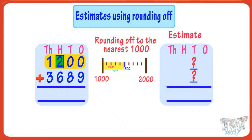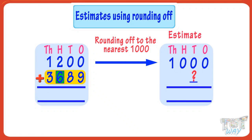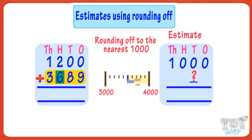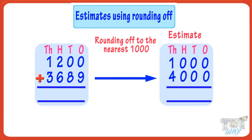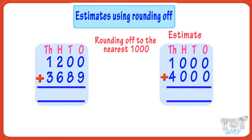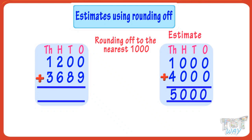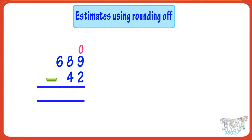In 1,200, the hundreds digit is 2, which is less than five, so we round it down to 1,000. In 3,689, the hundreds digit is 6, which is greater than five, so we round it up to the next thousand — that is 4,000. Adding 1,000 and 4,000, we get 5,000. So the estimate for adding 1,200 and 3,689 is 5,000.